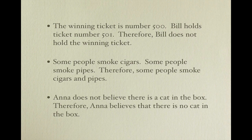Number 1. Imagine that the winning ticket is number 500 and Bill has 501. Also imagine that Bill does in fact hold the winning ticket. A possible explanation would be that Bill holds both tickets. The premise does not, after all, say that Bill holds only ticket number 501. The argument, therefore, is invalid.